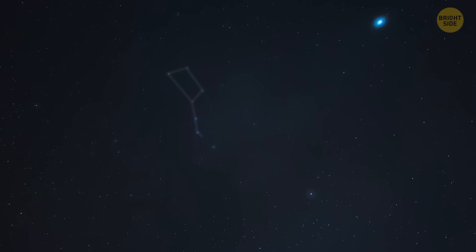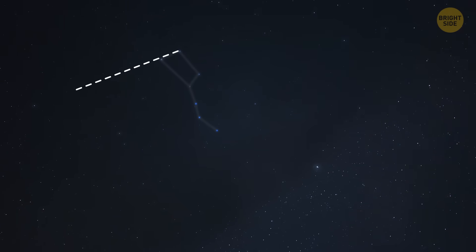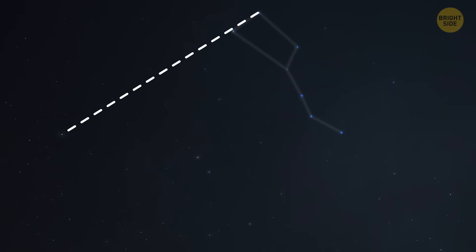Locating the North Star is quite easy on a clear night. The only thing you need to do is find the Big Dipper. Those two stars on the end of the Dipper's cup point the way to the North Star.